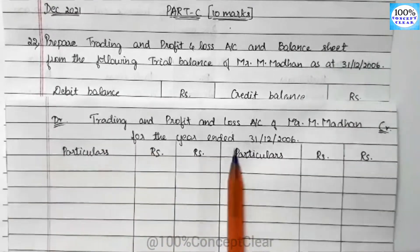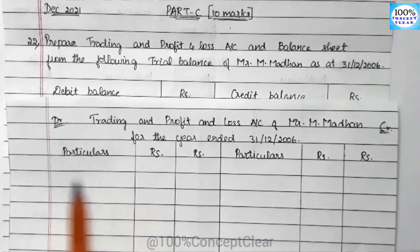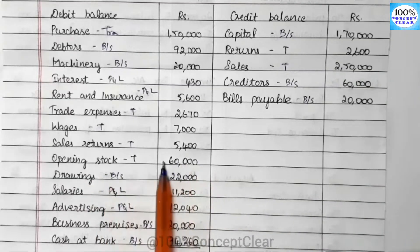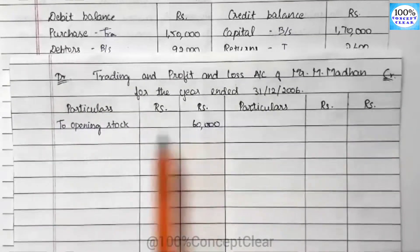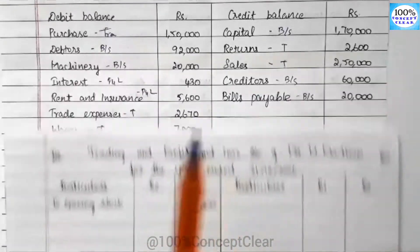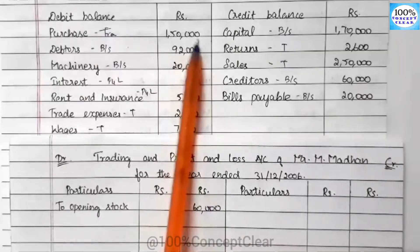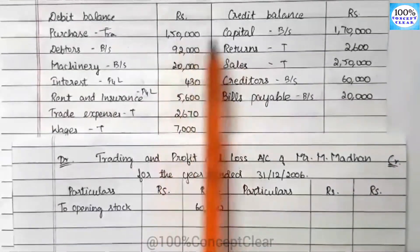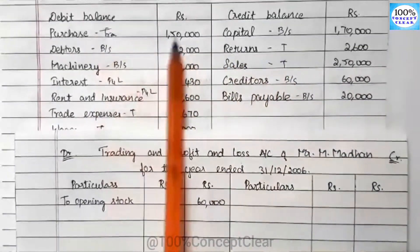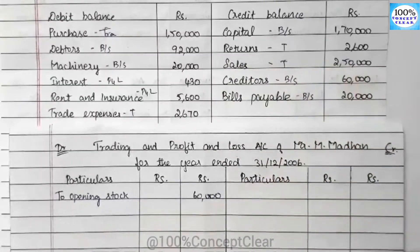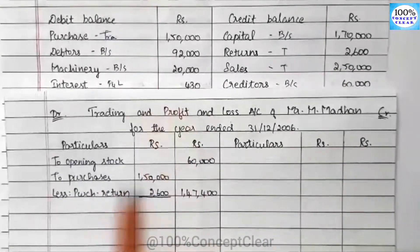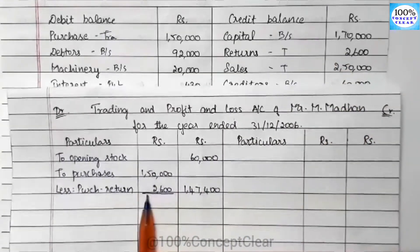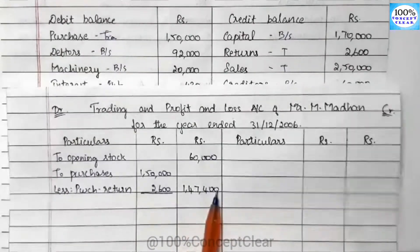We will get the debit side and credit side. In the Trading account, first there is opening stock of $60,000. Next, we will get the purchases: $1,50,000. There are returns — the purchase return is $2,600. So purchases $1,50,000 less purchase return $2,600 equals $1,47,400. Next, trade expenses $2,070. Next, wages $7,000.